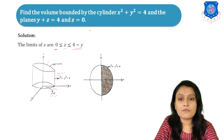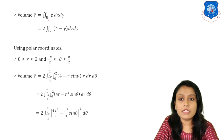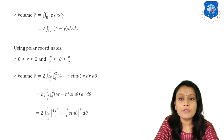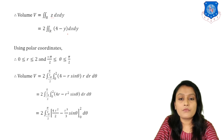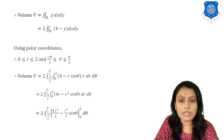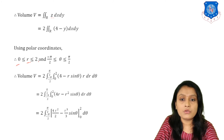The volume equals the double integral over R of z dx dy, which is 2 times the double integral over R of (4 minus y) dx dy. Using polar coordinates, the limits of R are 0 to 2, and the limits of theta are from minus pi/2 to pi/2, considering the required portion of the circle.